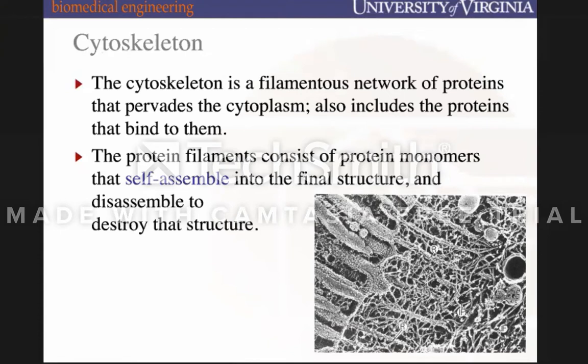This propulsion of listeria flying around inside our cells is possible because it's leveraging the cytoskeleton of the cell. The cytoskeleton is a filamentous network of proteins present throughout the entire cytoplasm. It includes not only the microtubules, intermediate filaments, and microfilaments discussed in the pre-lecture, but also the proteins that bind and regulate the polymerization of cytoskeleton proteins.